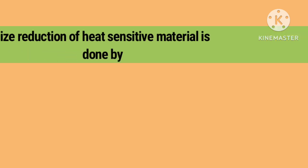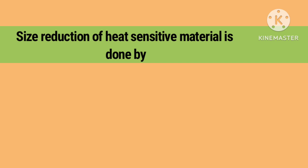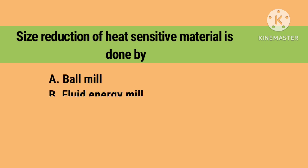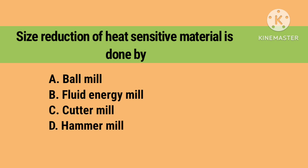Size reduction of heat-sensitive material is done by: Option A. Ball mill, B. Fluid energy mill, C. Cutter mill, D. Hammer mill. Right answer is B. Fluid energy mill.